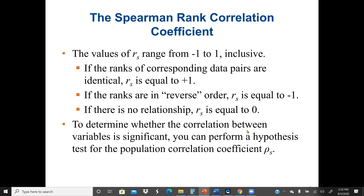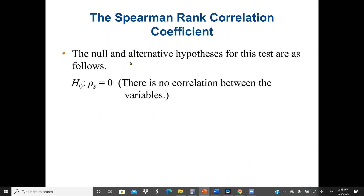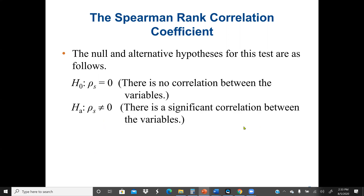To determine whether the correlation between variables is significant, we need to perform a hypothesis test. The Spearman rank correlation coefficient is a hypothesis test, where we test for the population correlation coefficient Rho. The null hypothesis is Rho equals 0, meaning there is no correlation between the two variables. If Rho is not equal to 0, then there is a significant correlation between the two variables.